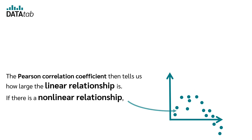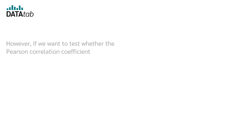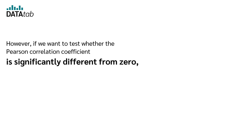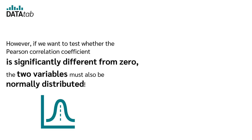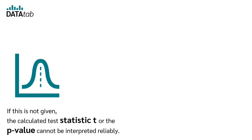If there is a non-linear relationship, we cannot tell from the Pearson correlation coefficient. However, if we want to test whether the Pearson correlation coefficient is significantly different from zero, the two variables must also be normally distributed. If this is not given, the calculated test statistic t or the p-value cannot be interpreted reliably.